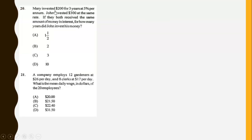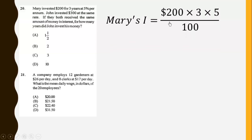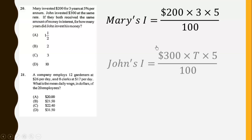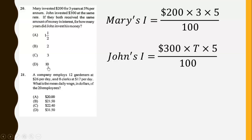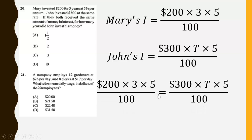Mary invested $200 for three years at 5% per annum. John invested $300 at the same rate. If they both receive the same amount in interest, for how many years did John invest his money? Mary's interest is calculated, and for John's interest we keep the term T unknown. Setting their interests equal and solving for T gives T equal to 2 years.